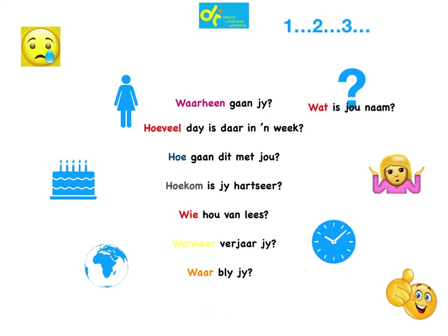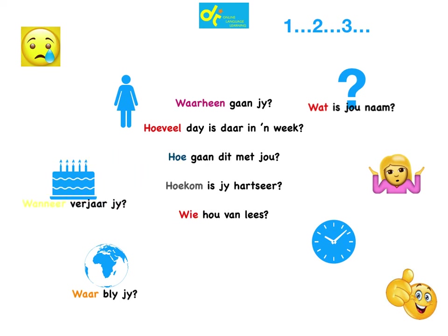Now let's see: 'Wat is jou naam?' goes with the question mark — you ask the question 'What?' Waar goes with 'Where do you live?' 'Wanneer verjaar jy?' goes with the birthday cake. 'Wie hou van lees?' refers to a specific person or a name — Wie means 'who.' And there's another one: 'Hoe laat is dit?' — Hoe laat means 'how late is it?' or 'What is the time?'